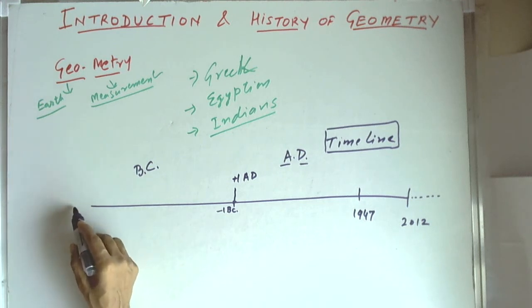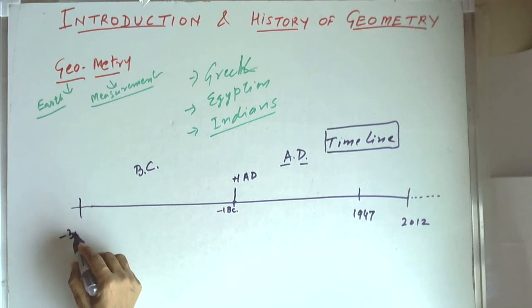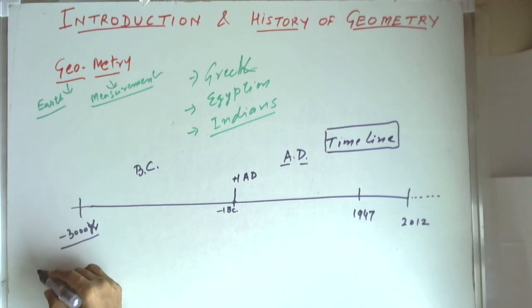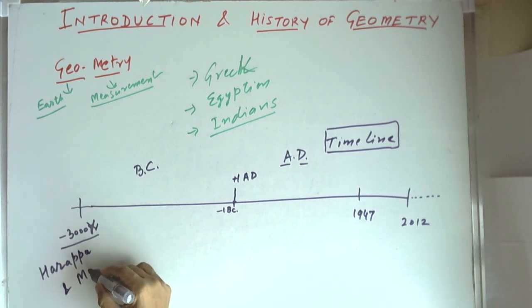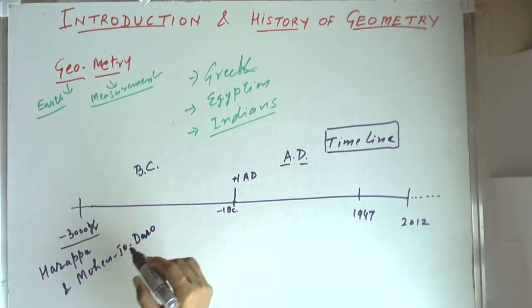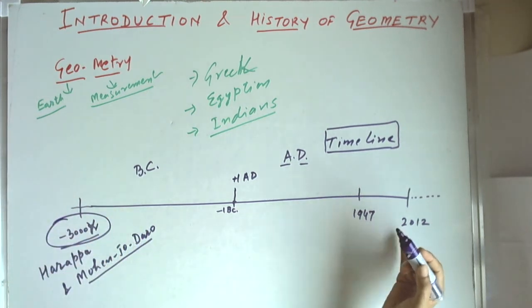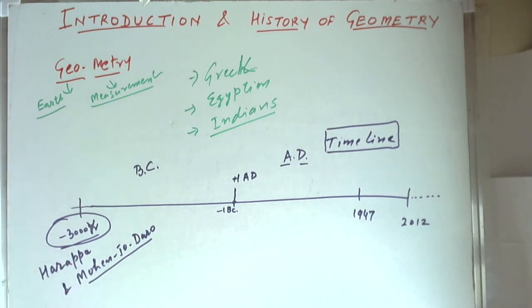Now, 3000 years before Christ, that means it is like minus 3000 years, that was the time the Indian civilization was quite mature. Through excavation we have seen that Harappa and Mohenjodaro had well-planned cities as back as 3000 years before Christ. That means from today almost 5000 years before, well-planned cities were there with parallel roads.